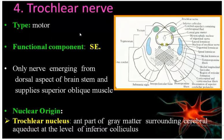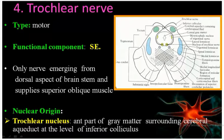The trochlear nerve is the only cranial nerve that comes out from the posterior surface of the brainstem. Most cranial nerves emerge from the ventral surface, but the trochlear nerve comes from the dorsal side. It decussates with the trochlear nerve of the opposite side and comes anteriorly to supply the superior oblique (SO4).